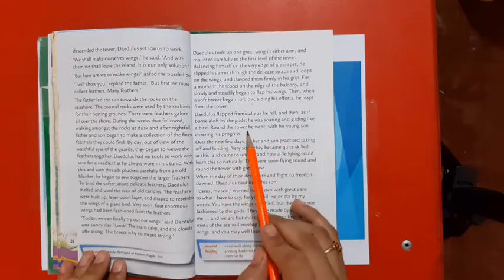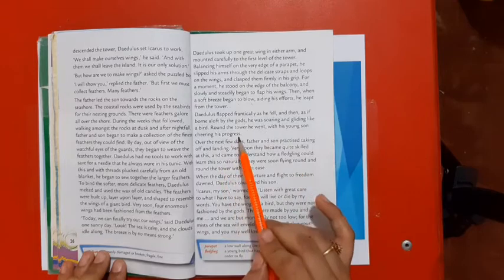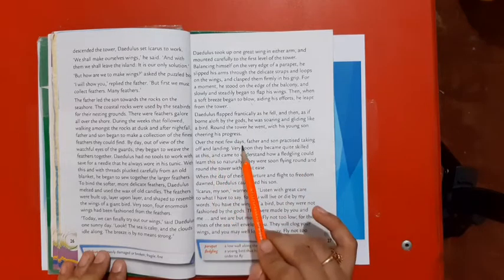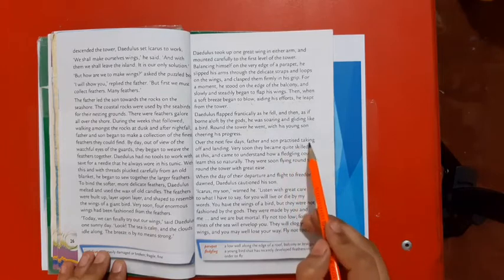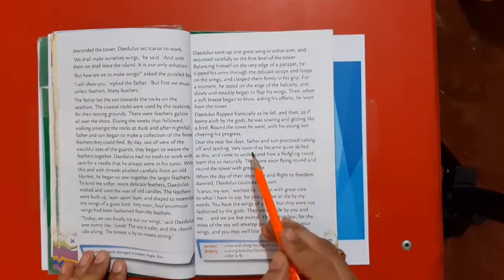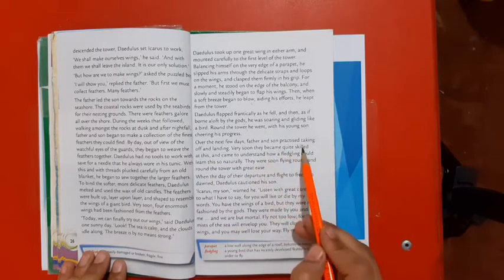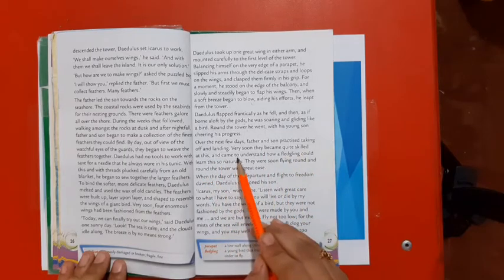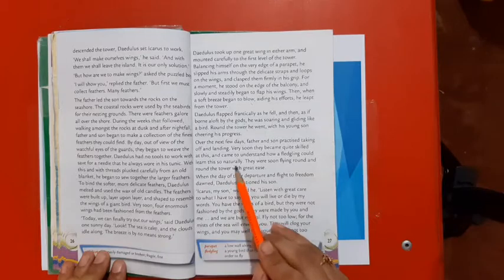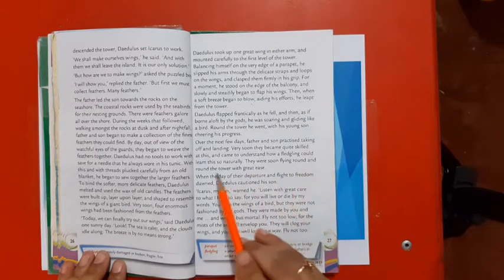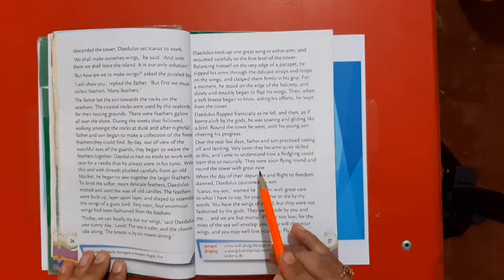Round the tower he went with his young son cheering his progress. Over the next few days, father and son practiced taking off and landing. Very soon they became quite skilled at this and came to understand how a fledgling could learn this so naturally. They were soon flying round and round the tower with great ease.